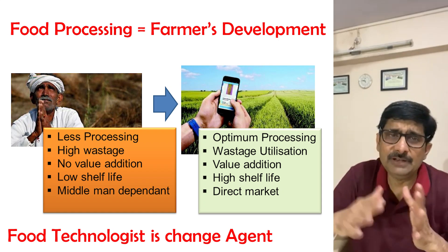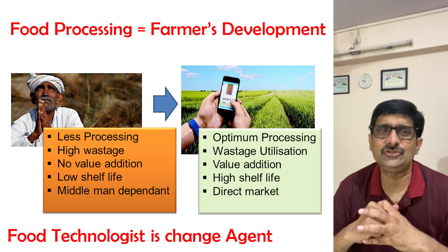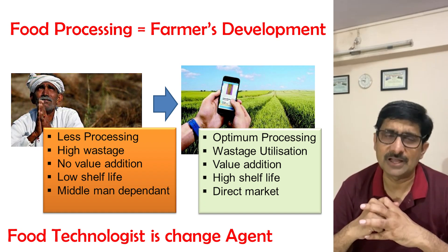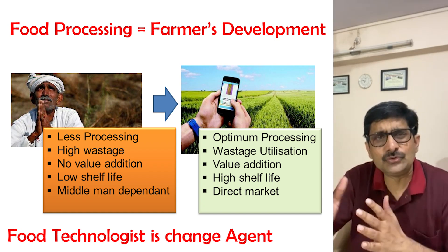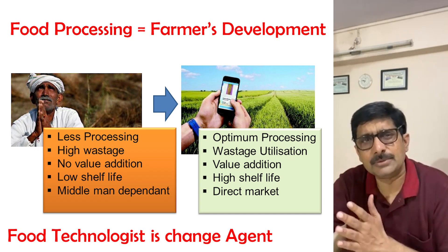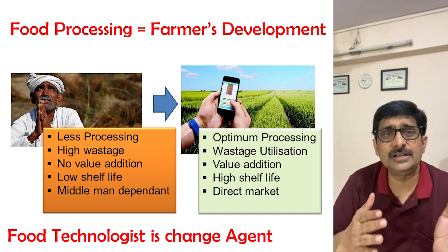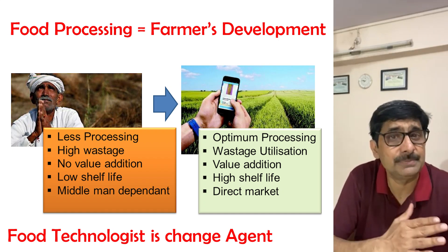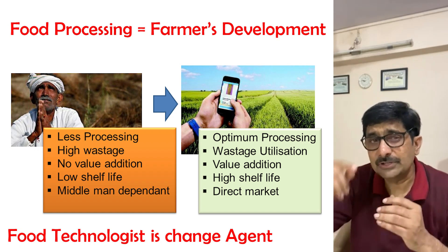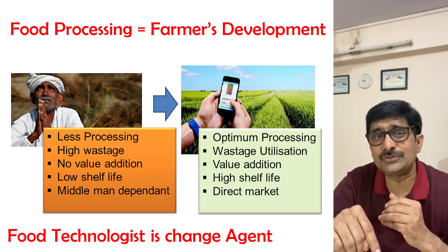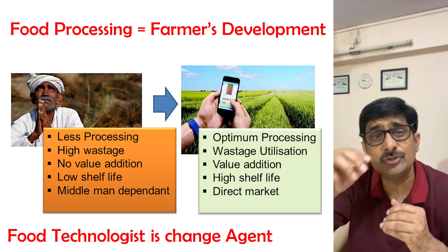When we compare the condition with the US, Malaysia, and France, the food processing number for fruits and vegetables is above 80%, whereas in India it is less than 10%. That is why the role of food processing and food technologist is very, very important — because it is a social issue.